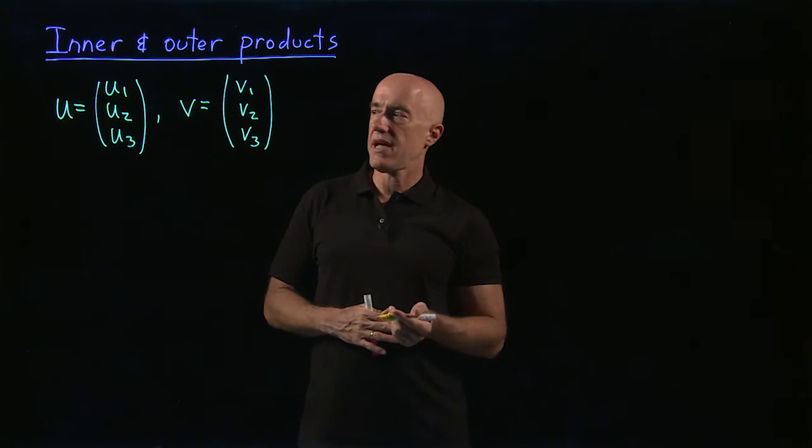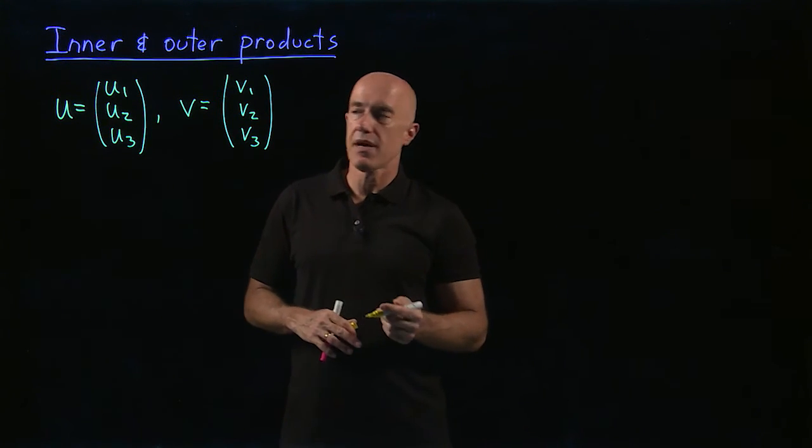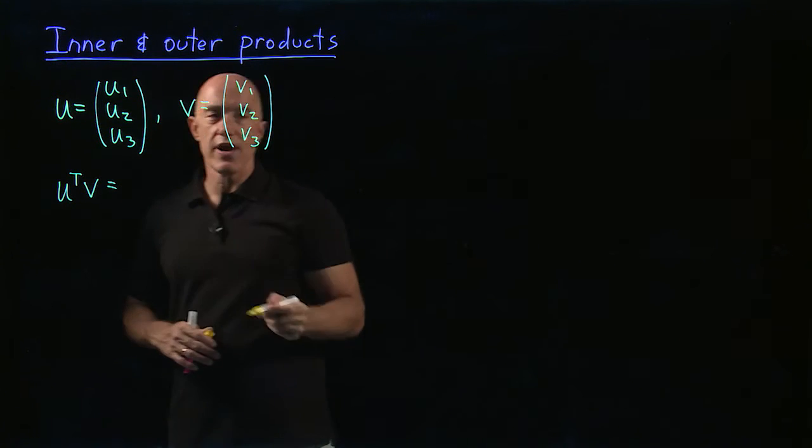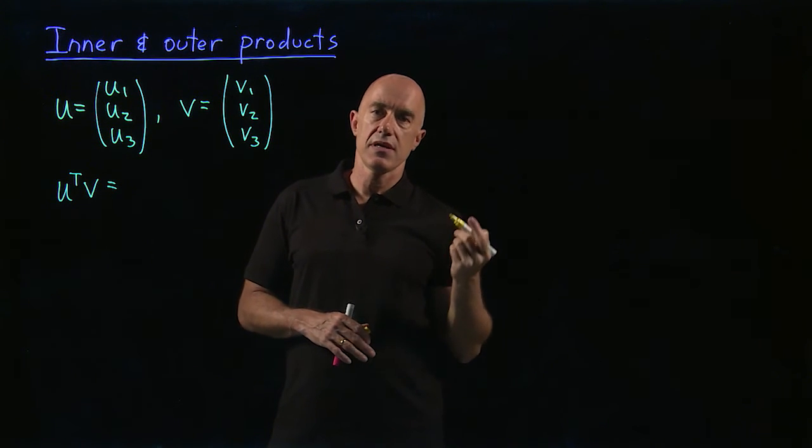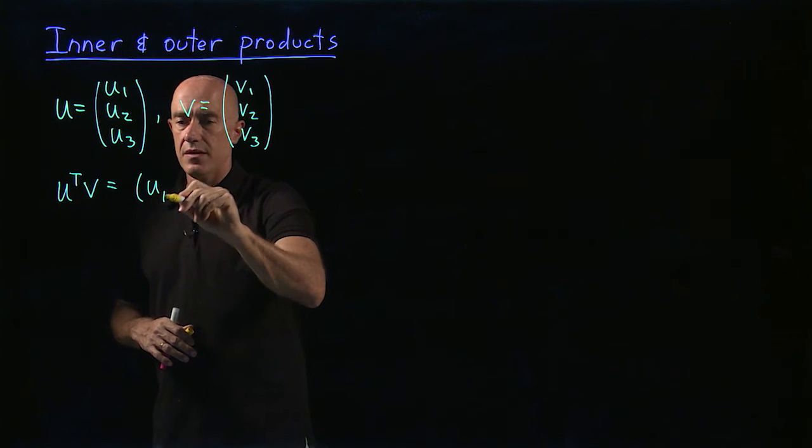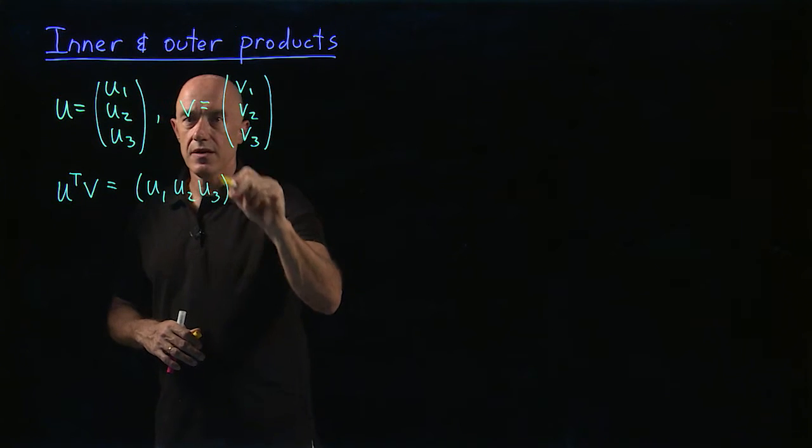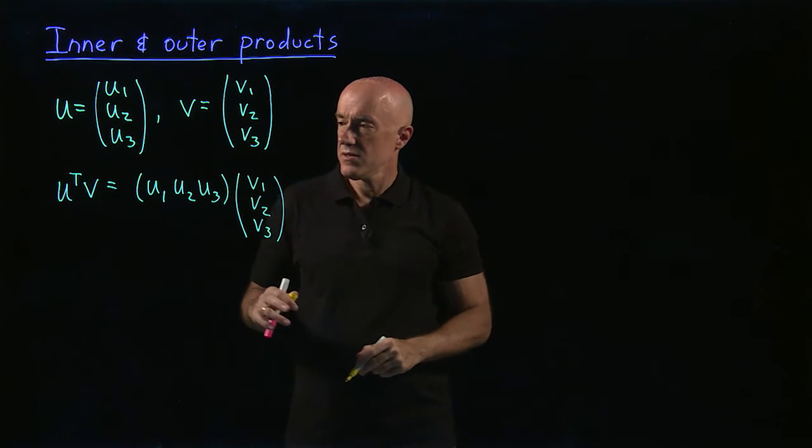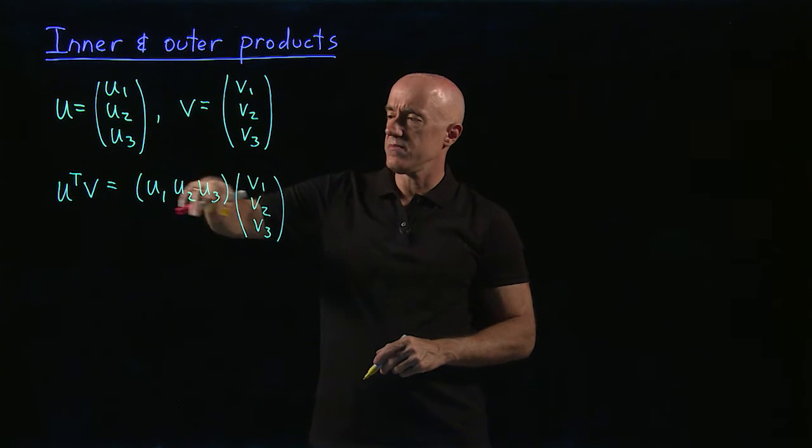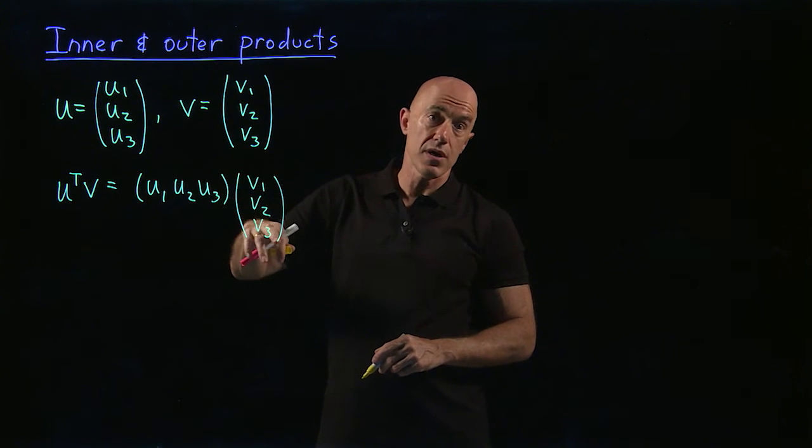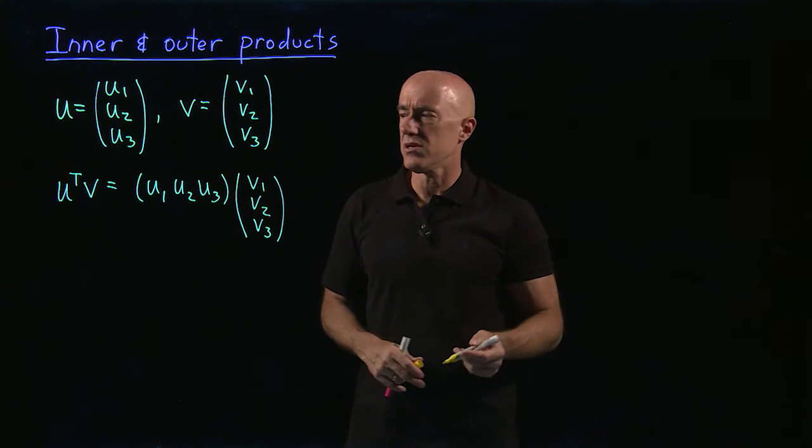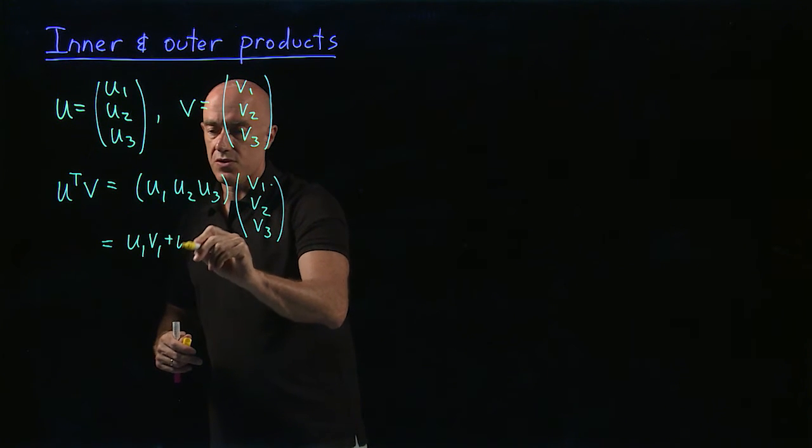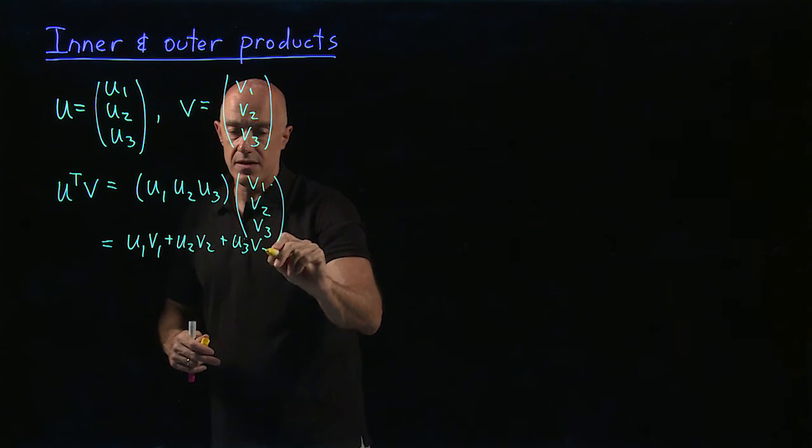How do we do that in matrix algebra? Well, we can use the transpose operator. So if we write u transpose times v, then the transpose of a column vector is a row vector. So we have u1, u2, u3 times v, which is v1, v2, v3. So here we have one row, three columns, so one by three times three by one. And we end up with a one by one, which is what we call a scalar. So this is a straightforward multiplication, u1v1 plus u2v2 plus u3v3.